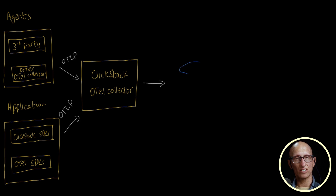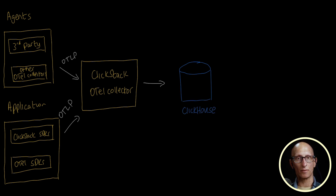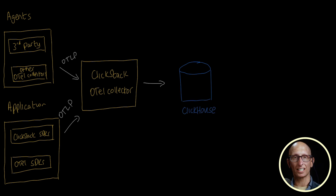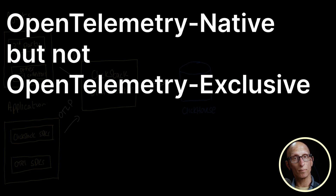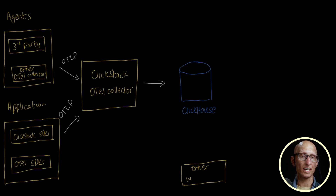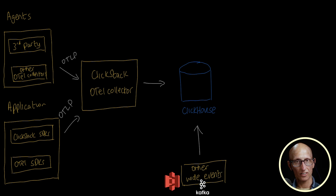The data is then ingested into ClickHouse with individual tables for each type of data. While we recommend using the OpenTelemetry collector for the best experience, this component is actually optional. You can think of ClickStack as being OpenTelemetry native, but not OpenTelemetry exclusive. You could also send data directly to ClickHouse from S3, Kafka, ClickPipes, or even other agents.